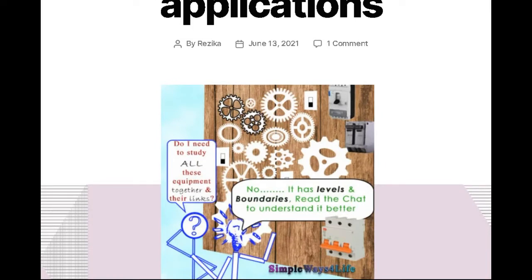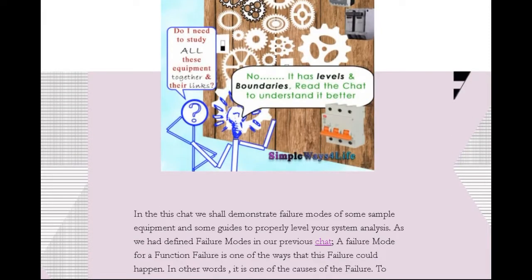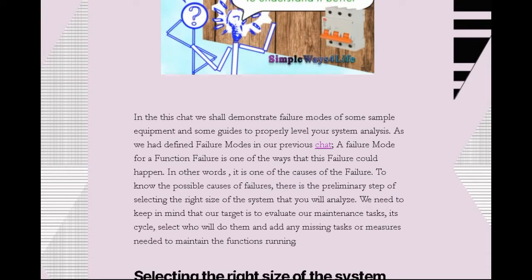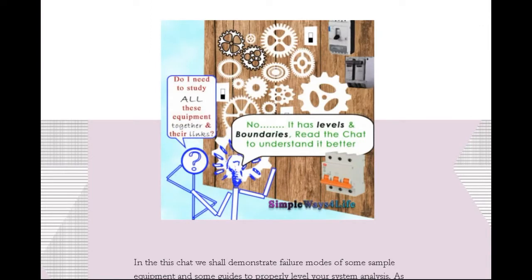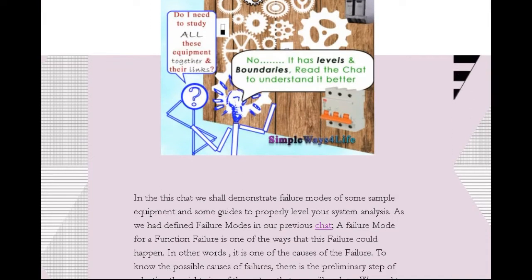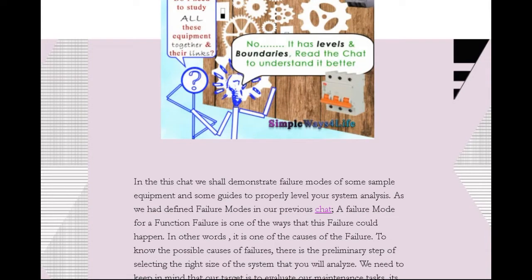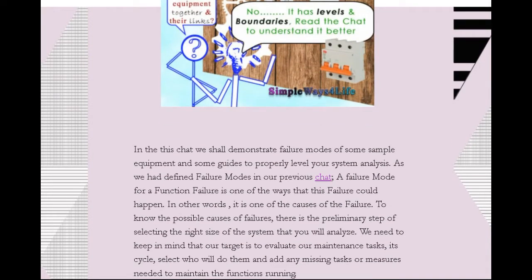Failure modes describe how the failure of a sub-part or part of the system — any gear, any set of gears, any circuit breaker, any sensor — occurs. To be able to study how a part fails, I should be able to describe the function of that part. When I know the function of this specific part, I can say how it fails, and when I see how the function fails, I can identify the causes of that failure. Those causes should be approachable.